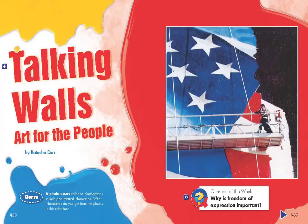Talking Walls: Art for the People by Katasha Diaz. Genre: A photo essay relies on photographs to help give factual information. What information do you get from the photos in this selection?